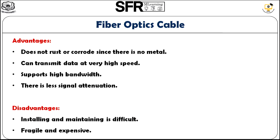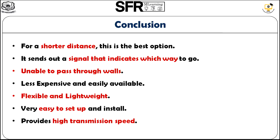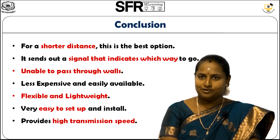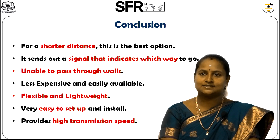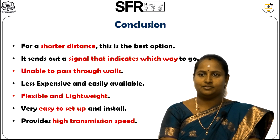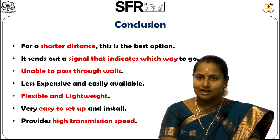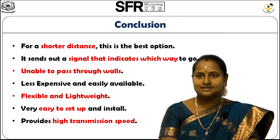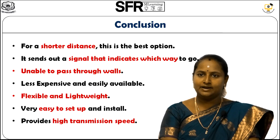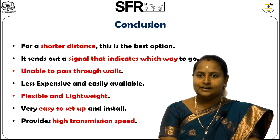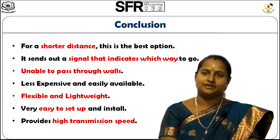Regarding advantages and disadvantages of fiber optic cable: since there is no metal, it does not cause rust or corrosion. It can transmit data at very high speed, supports high bandwidth, and there is less signal attenuation. The disadvantages are that installation and maintenance are more difficult, and the cable is fragile and expensive. That is all about guided transmission media. In conclusion, guided transmission media is best for short distance network connections. It can send signals along a defined path, but is unable to pass through walls. It is less expensive, easily available, flexible, lightweight, easy to set up and install, and provides high transmission speed. Thanks for watching.